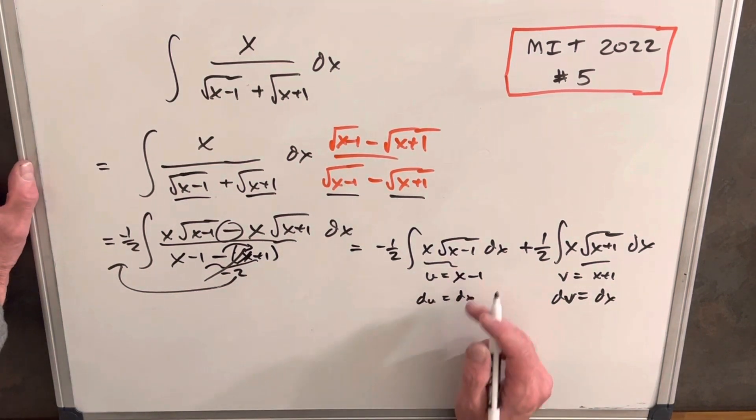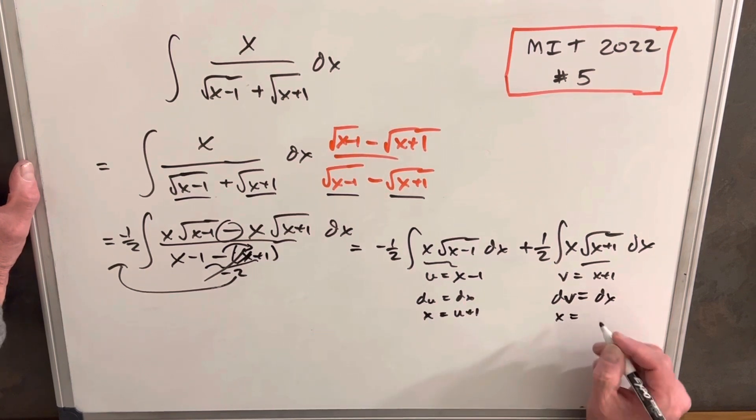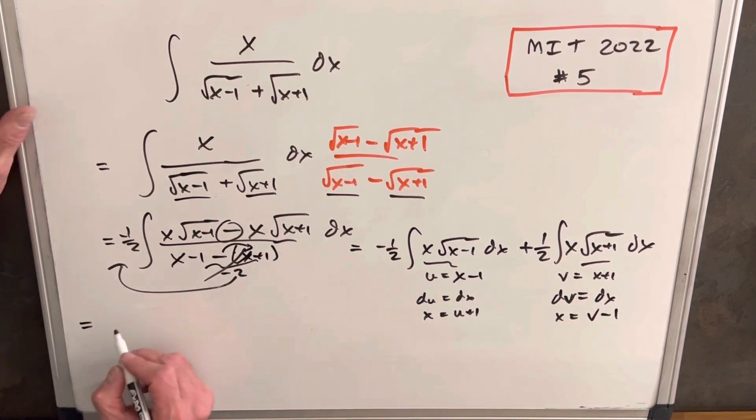And then let's also note that our x value here, if we just add 1 to both sides, it's going to be u plus 1. And over here, our x value is going to be v minus 1. So now we have everything we need to rewrite this.